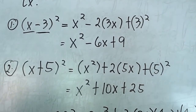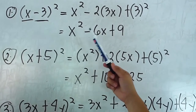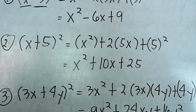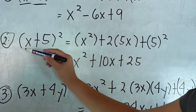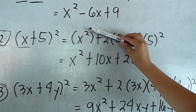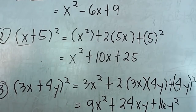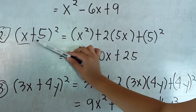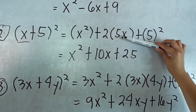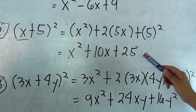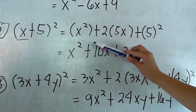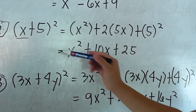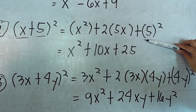The second example is (x plus 5) squared. Just like we did in the first example, first we square the first term, which is x, so x squared plus. The second step is the product of the first term and the last term. x and 5, their product is 5x, so we multiply by 2. So 2 times 5x, plus the last term is 5, which is 5 squared.